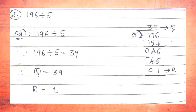From the 5-table: 5×1=5, 5×2=10, 5×3=15, 5×4=20. Since 20 is greater than 19, we take 5×3=15. We write 15 and subtract: from 9 subtract 5 gives 4, and 1−1=0. Next we pull down the number 6, making it 46.